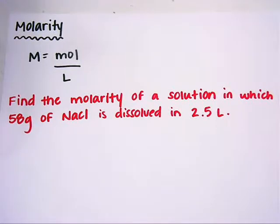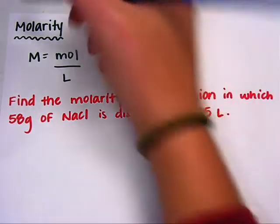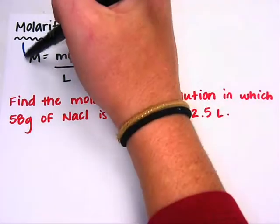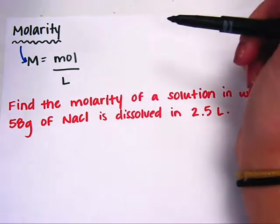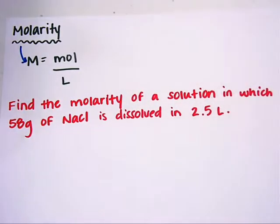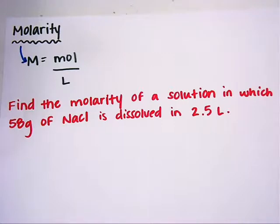Our next topic is molarity. Molarity is moles over liters, so this big M stands for molarity. We have moles and we have liters, so we're talking about volume. Molarity is talking about concentration. If you think about sweet tea, it could be unsweet, it could be sweet, or it could be like Bojangles sweet — super sweet tea. Those are all different concentrations of tea.